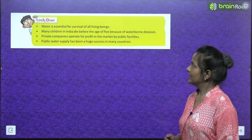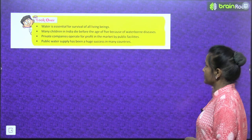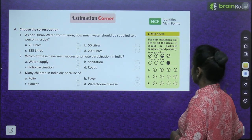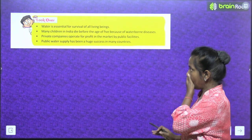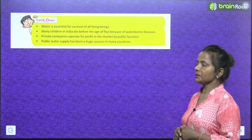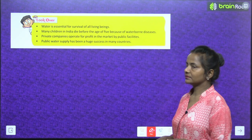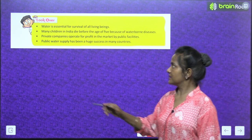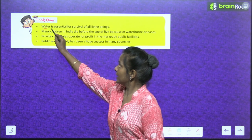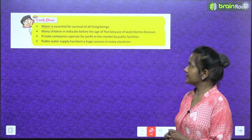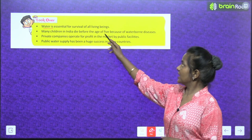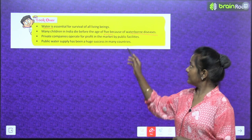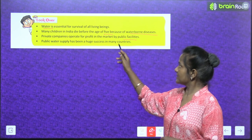Now let's look over this chapter. Water is essential for the survival of all living beings — hum sabko pata hai ki jo water hai wo bahut zaruri hai hum sabke survival ke liye. Many children in India die before the age of five because of waterborne diseases. Private companies operate for profit in the market. Public water supply has been a huge success in many countries.